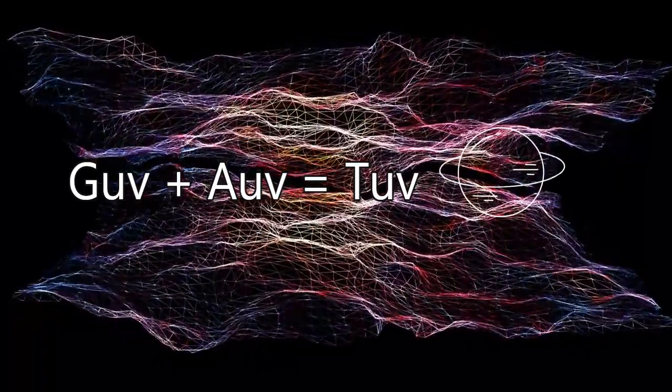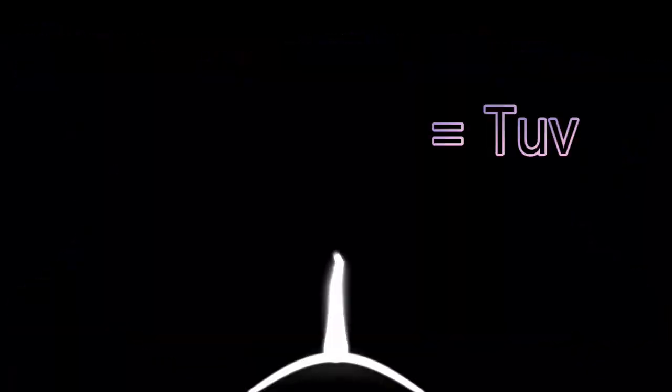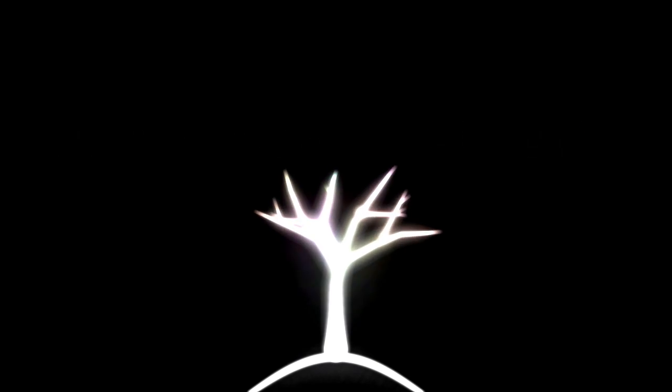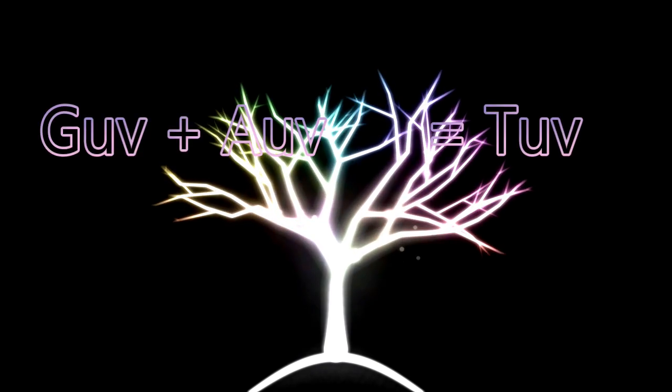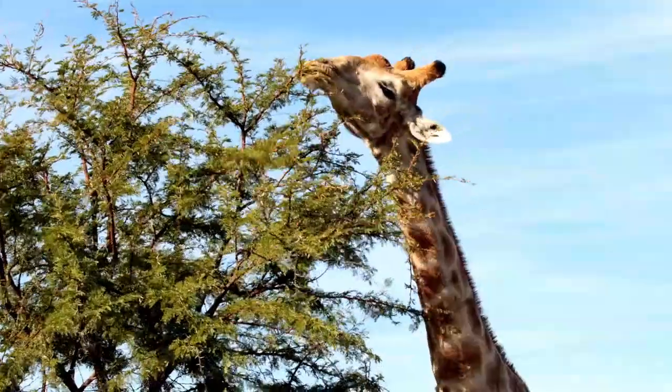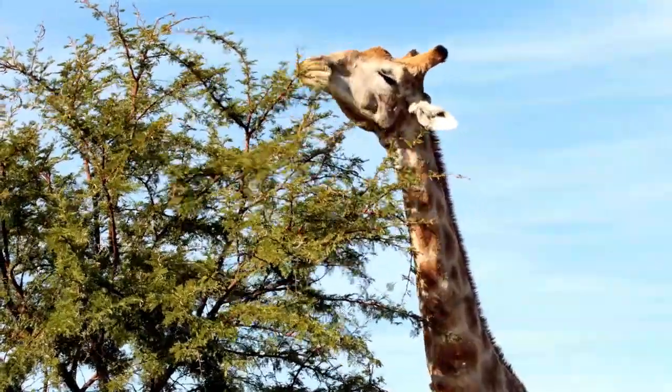In essence, we have a space field and a matter field. The second field species likely diverged from the first by adapting to exploit the properties of the original, much like animals diverged from plants and evolved to harness them as an energy source.